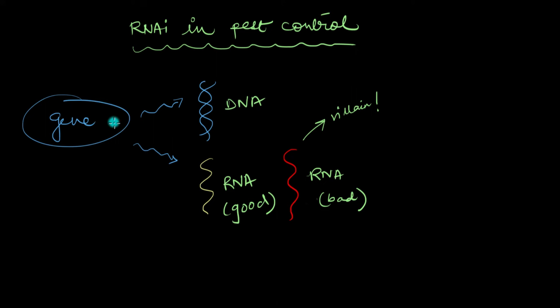The first thing that comes to our minds when we say genes is probably DNA, and DNA is always accompanied by RNA. Now the thing about RNAs is that not all of them are good.